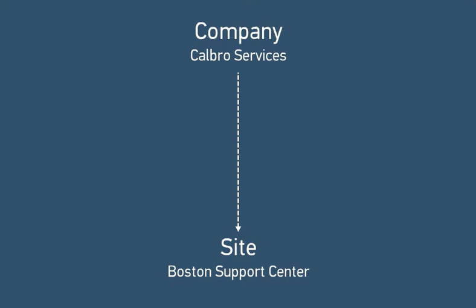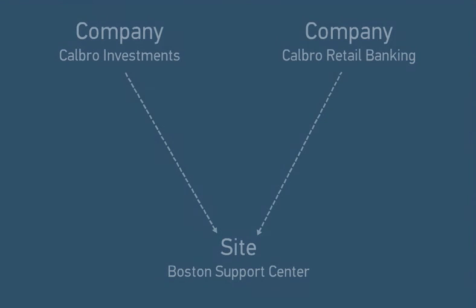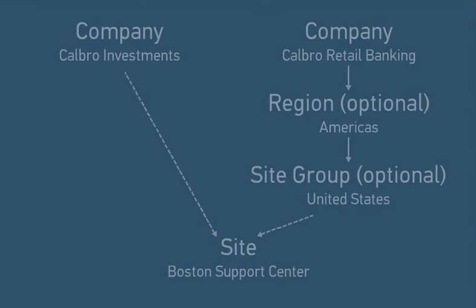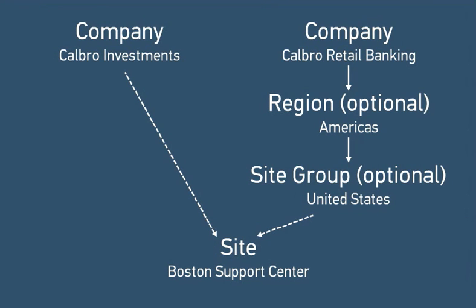Locations are part of your foundation data and represent a company's physical geographical locations, such as offices, campuses, or warehouses. The relationship of a company to a site identifies a unique location, but a site can be related to more than one company, which is a likely scenario if you're using companies in ITSM to represent business units within your organization. The location hierarchy can optionally include a region, a site group, or both if you need those layers to organize your sites.